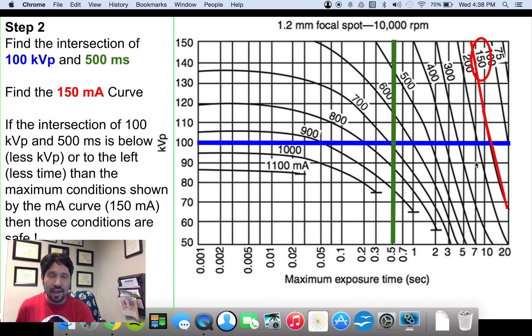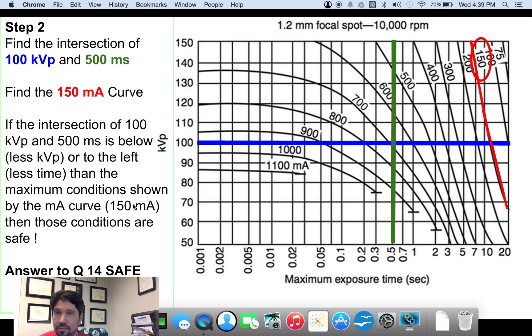So in this problem, we would say that it's safe because the intersection of 100 kVp and half a second is far to the left and far below this curve. So we're to the left and below this curve, which is our maximum kVps and time that we can do at that exposure at that current rate.